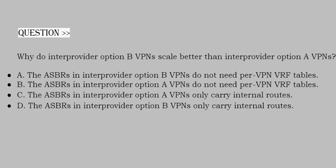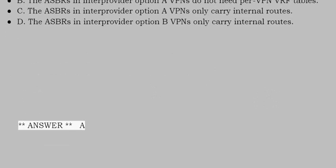Next question: Why do inter-provider option B VPNs scale better than inter-provider option A VPNs? Option A: The ASBRs in inter-provider option B VPNs do not need per VPN VRF tables. Option B: The ASBRs in inter-provider option A VPNs do not need per VPN VRF tables. Option C: The ASBRs in inter-provider option A VPNs only carry internal routes. Option D: The ASBRs in inter-provider option B VPNs only carry internal routes. Correct answer is option A.